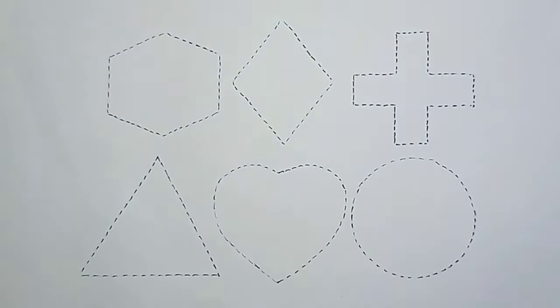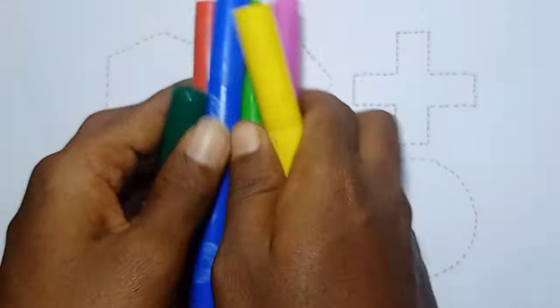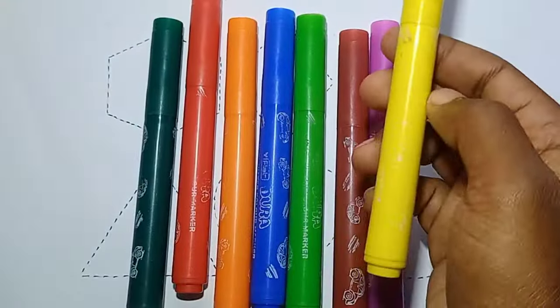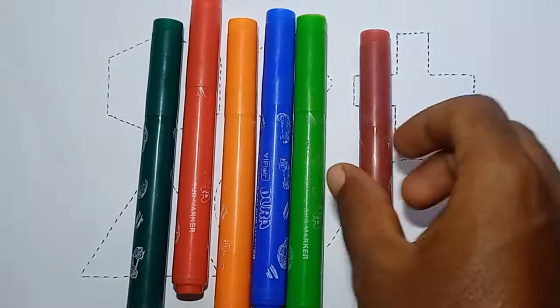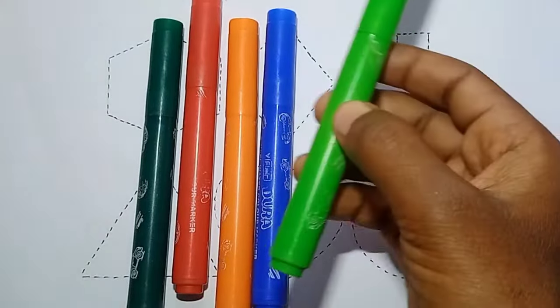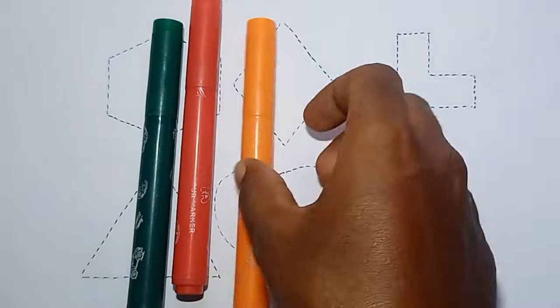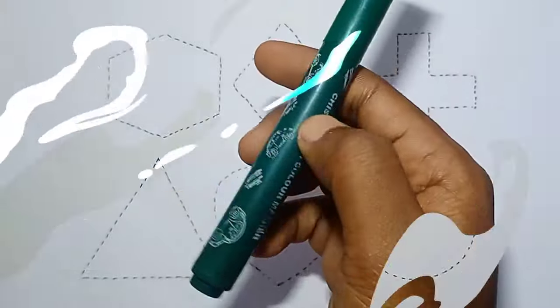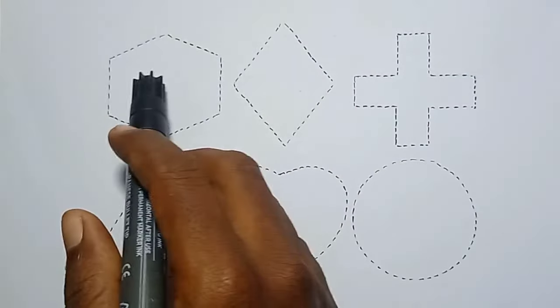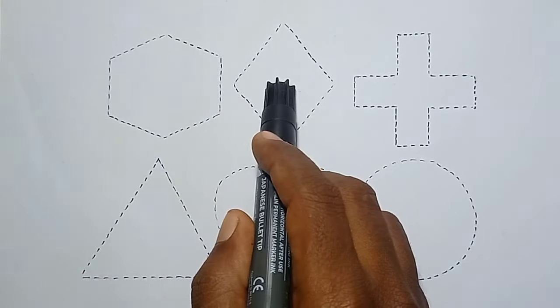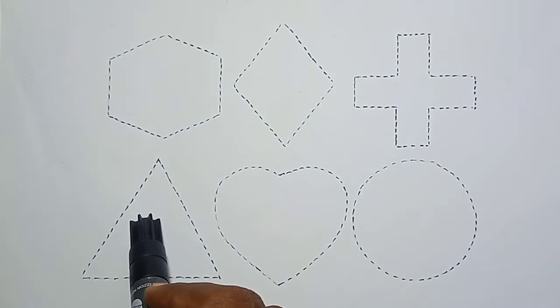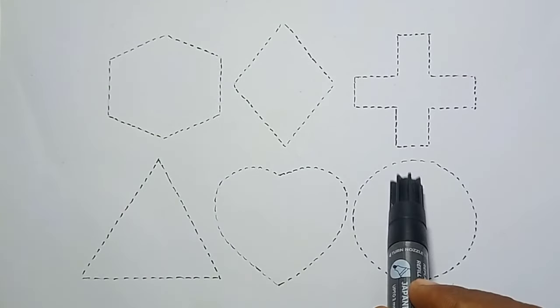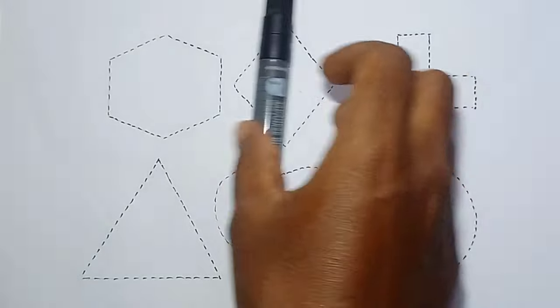Hello kids, welcome to my channel. Let's learn some color names: yellow, pink, brown, light green, blue, orange, red, and dark green. 2D shapes: hexagon, rhombus, plus, triangle, heart, and circle.